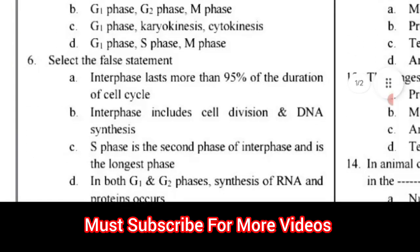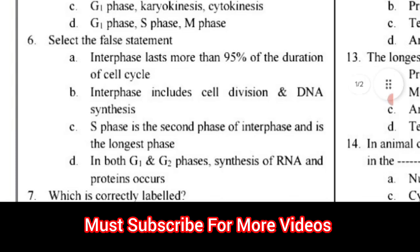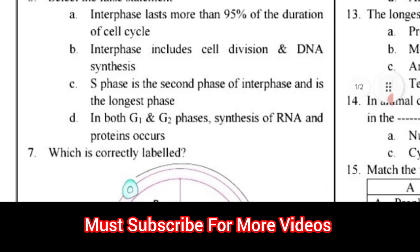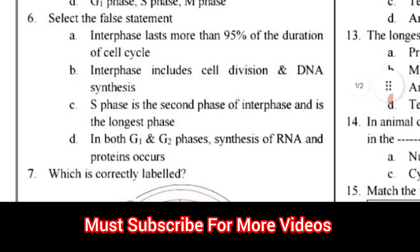Question number 6: Select the false statement. Option A: Interphase lasts more than 95% of the duration of cell cycle. Option B: Interphase includes cell division and DNA synthesis. S phase is the second phase of interphase and is the longest phase. Option C: In both G1 and G2 phase, synthesis of RNA and protein occur. The correct answer for question number 6 is option B.